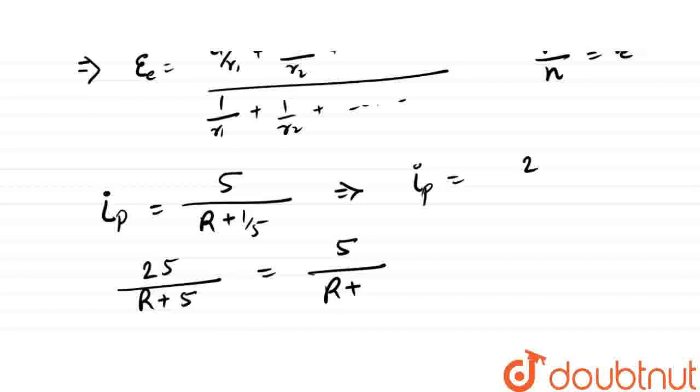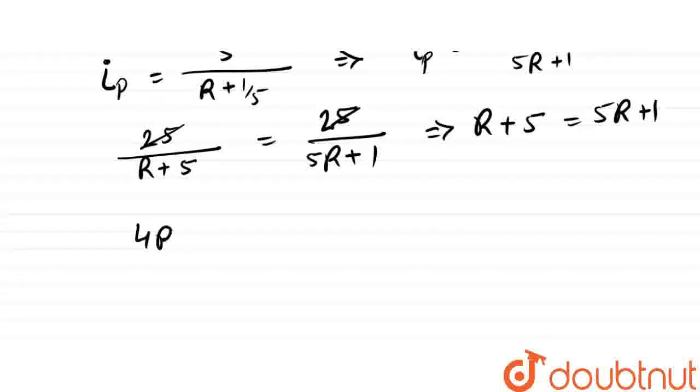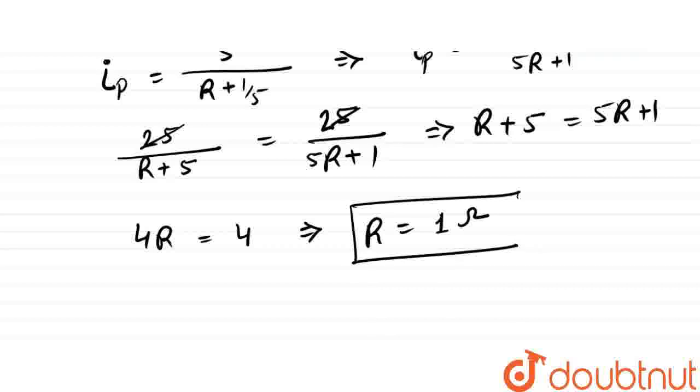It's 25 upon 5R plus 1. 25 cancels. In the same way we will solve the problem. So 4 is equal to 5 minus 1, so the value of resistance R is equal to 1. If R is equal to 1, then we can solve it.